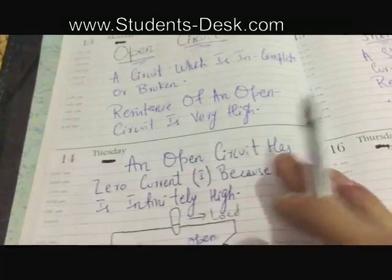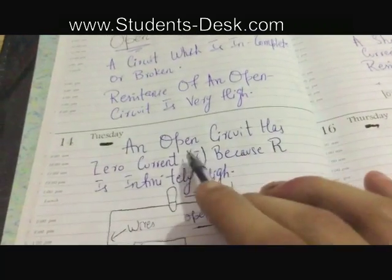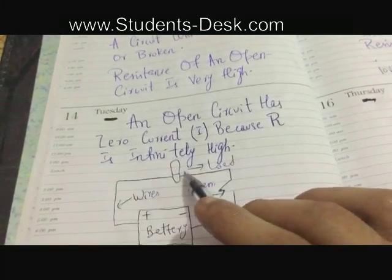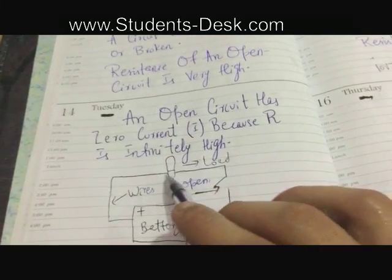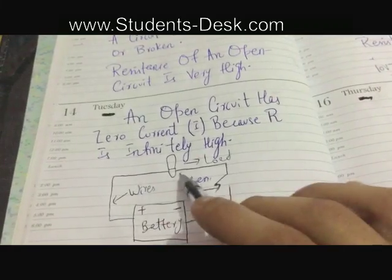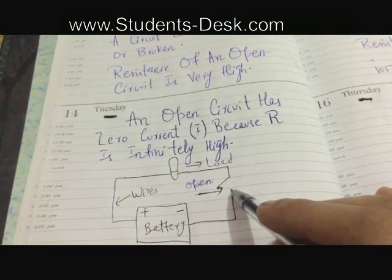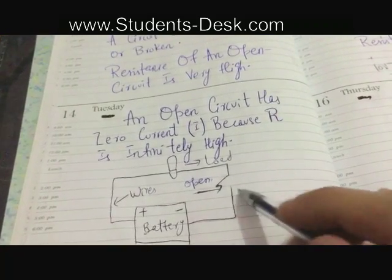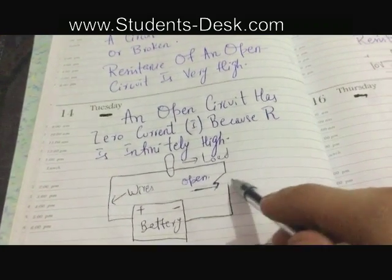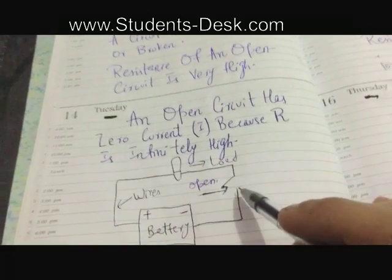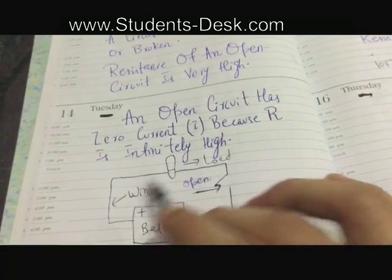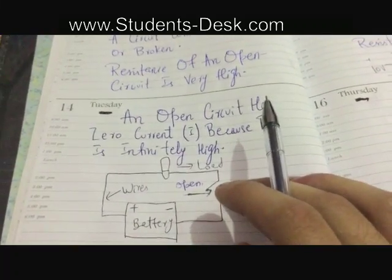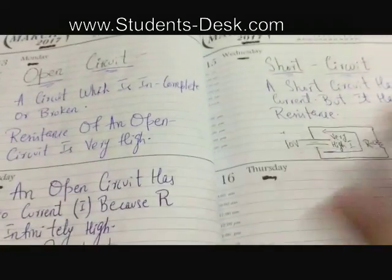For understanding the relationship between current and resistance, let's take a look at an example of an open circuit. Suppose this is a load connected through wires to the battery, and over here it is open. This can be due to a broken wire, a missing or broken component, or a very high resistance that prevents the current from flowing to complete the circuit. This is what an open circuit is.